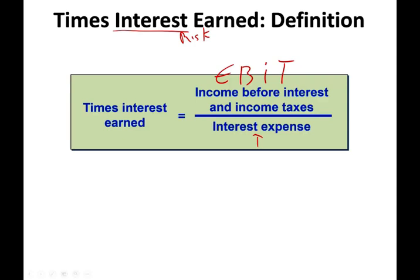Using simple numbers: if you have $100 in income before interest and taxes and interest expense of $10, the ratio is 10. This ratio of 10 says that from your earnings you can cover your interest expense 10 times. The higher this coverage, the better off you are — 15 is better than 10, 20 is better than 10.